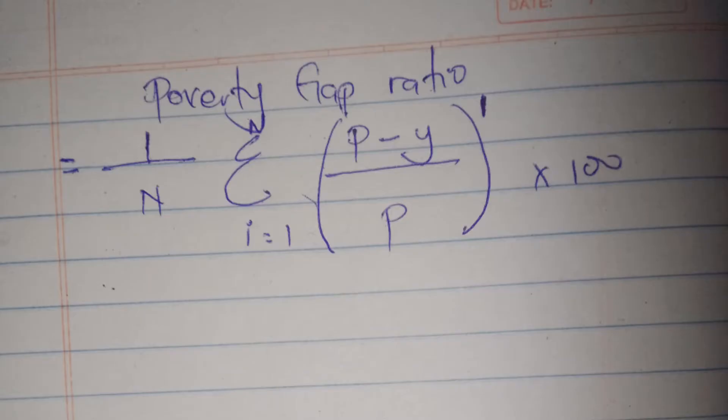Welcome to my channel. In this video, we are going to look at how we can calculate the poverty gap ratio over individuals. The formula for calculating the poverty gap ratio is 1 out of n, summation (p minus y) out of p, then power 1, times 100.